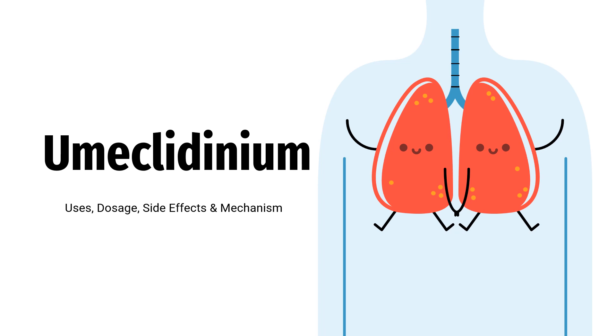Umeclidinium is a long-acting muscarinic antagonist used as a long-term maintenance treatment of airflow obstruction in patients with chronic obstructive pulmonary disease, COPD.